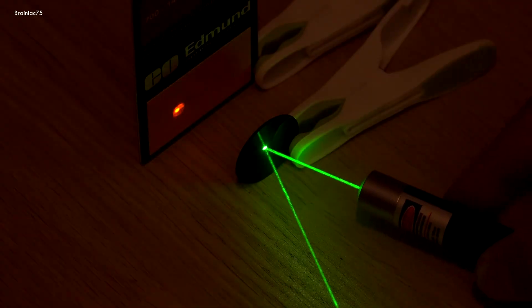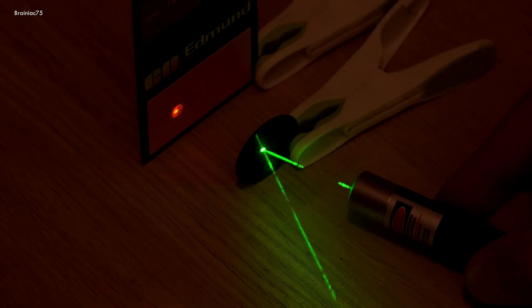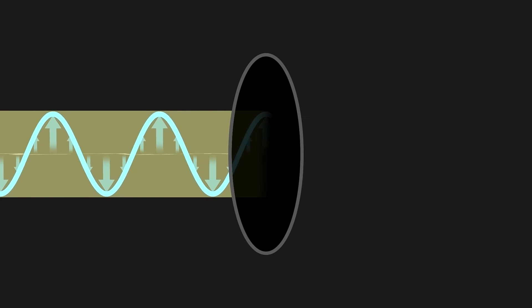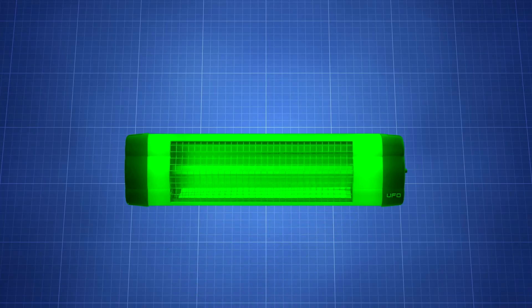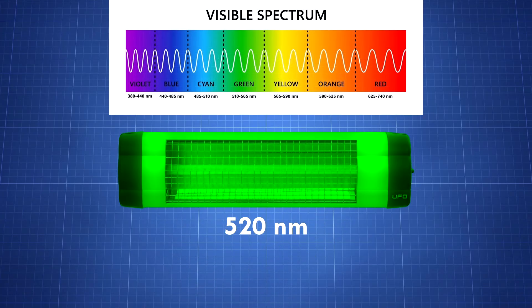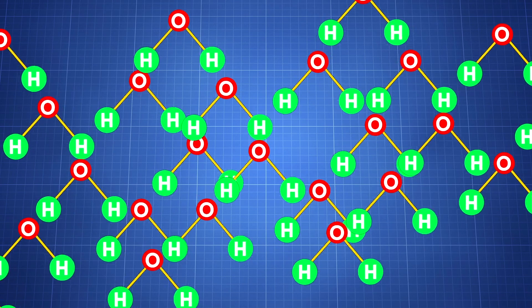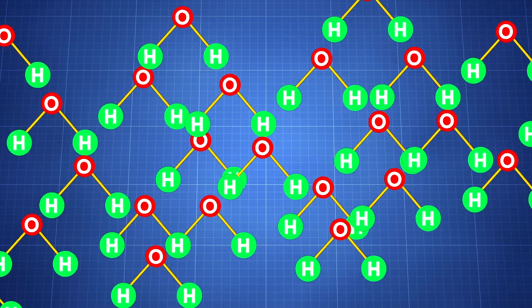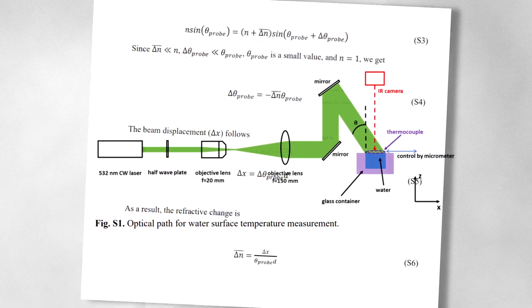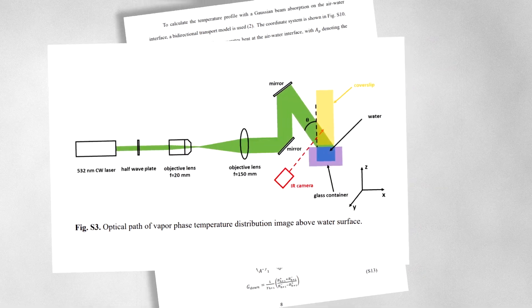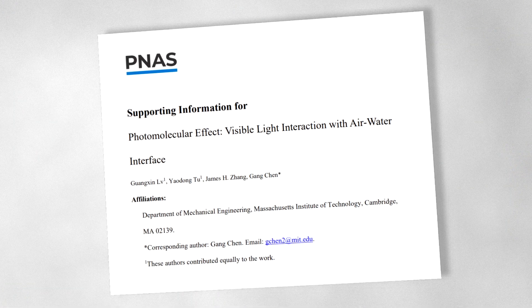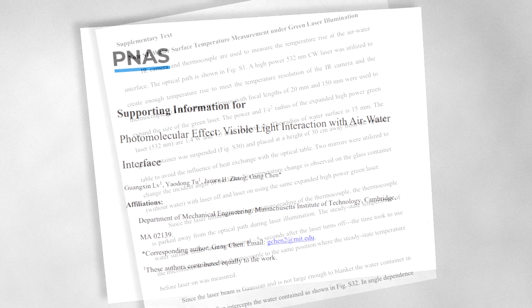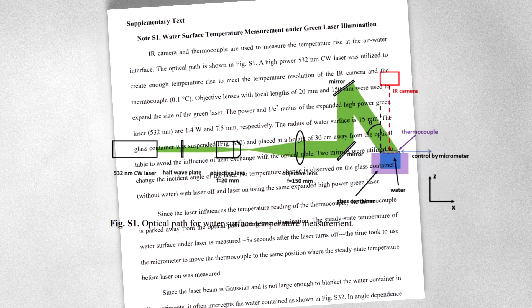Of course, there are still some big questions to answer. The researchers have proposed a model to explain the angle and polarization dependence, but they're still trying to figure out why the effect peaks in green light. And as with any groundbreaking discovery, there's some skepticism in the scientific community that needs to be overcome. The researchers are working closely with other groups to replicate their findings and get everyone on board. But I have no doubt they'll get there.